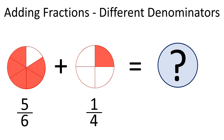To add two fractions with different denominators, we have to find a way to make each denominator — or number of parts in a whole — the same in each fraction before adding. This is where equivalent fractions come in handy.